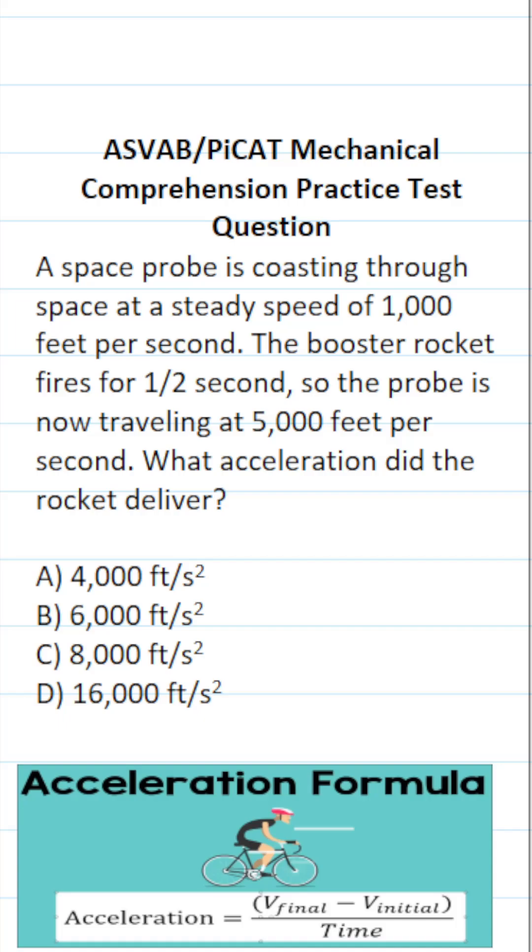This mechanical comprehension practice test question for the ASVAB and PyKET says: a space probe is coasting through space at a steady speed of 1,000 feet per second. The booster rocket fires for half a second, so the probe is now traveling at 5,000 feet per second. What acceleration did the rocket deliver?